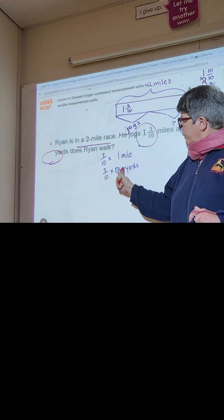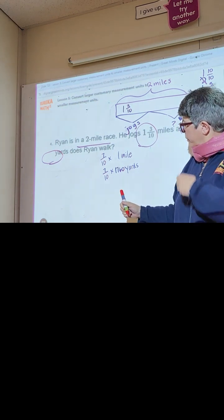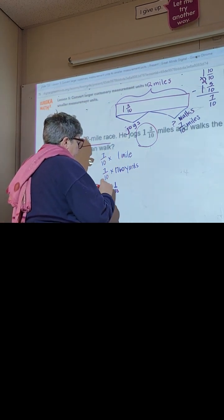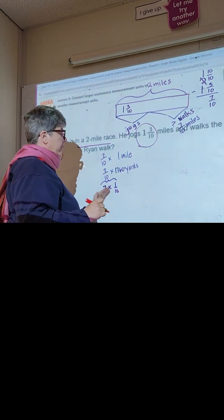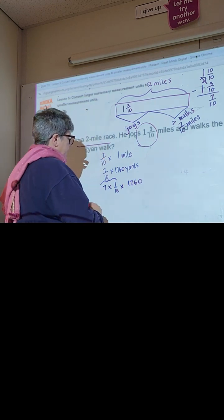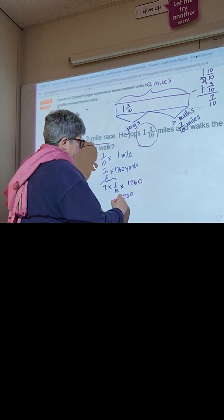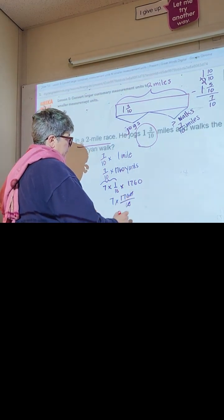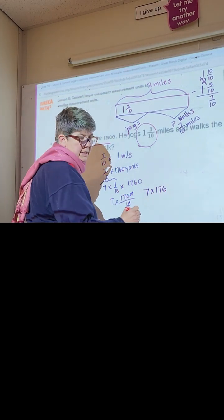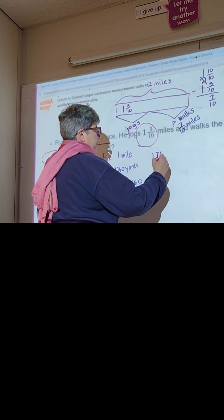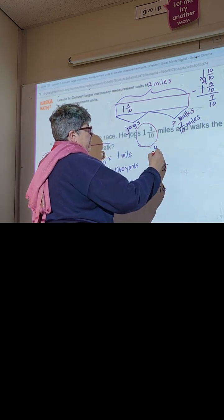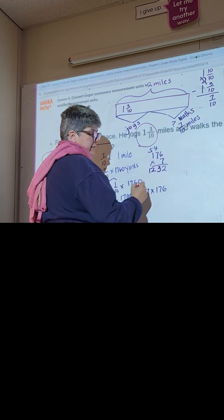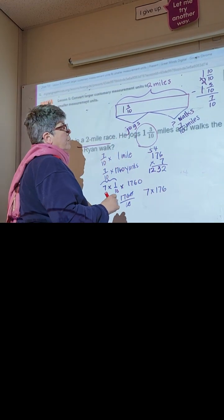We can see those two are equal to each other, so now we just multiply. We break seven-tenths into seven times one-tenth, then multiply one-tenth times 1,760. Take out a zero: 1,760 divided by ten is 176, then seven times 176. Six times seven is 42; seven times seven is 49, plus 4 is 53; seven plus five is twelve — so that gives us 1,232 yards.